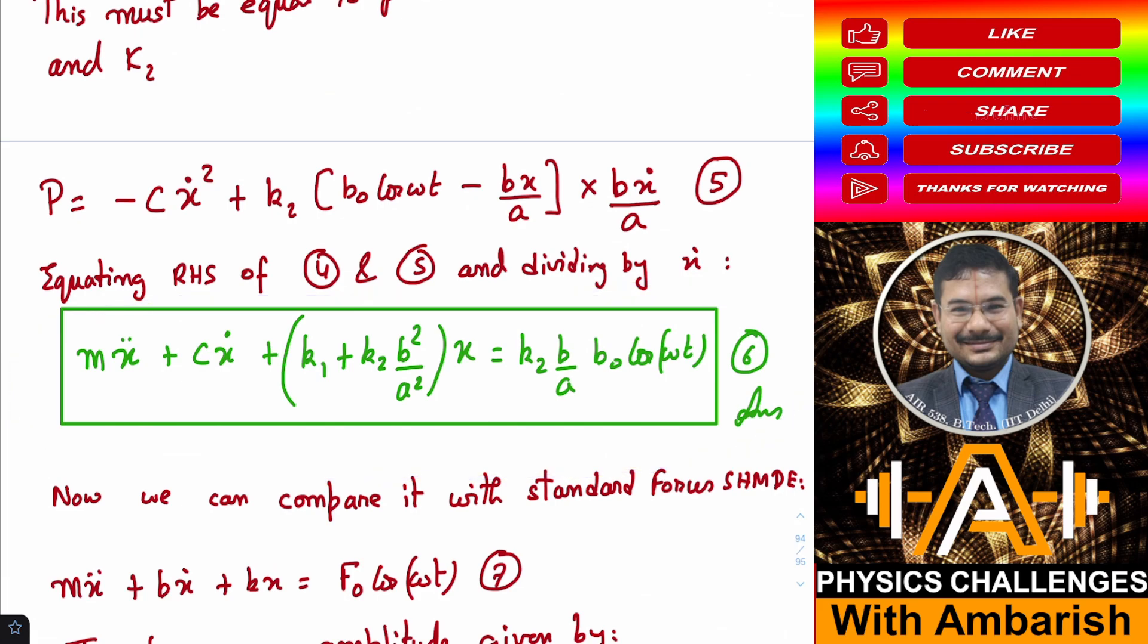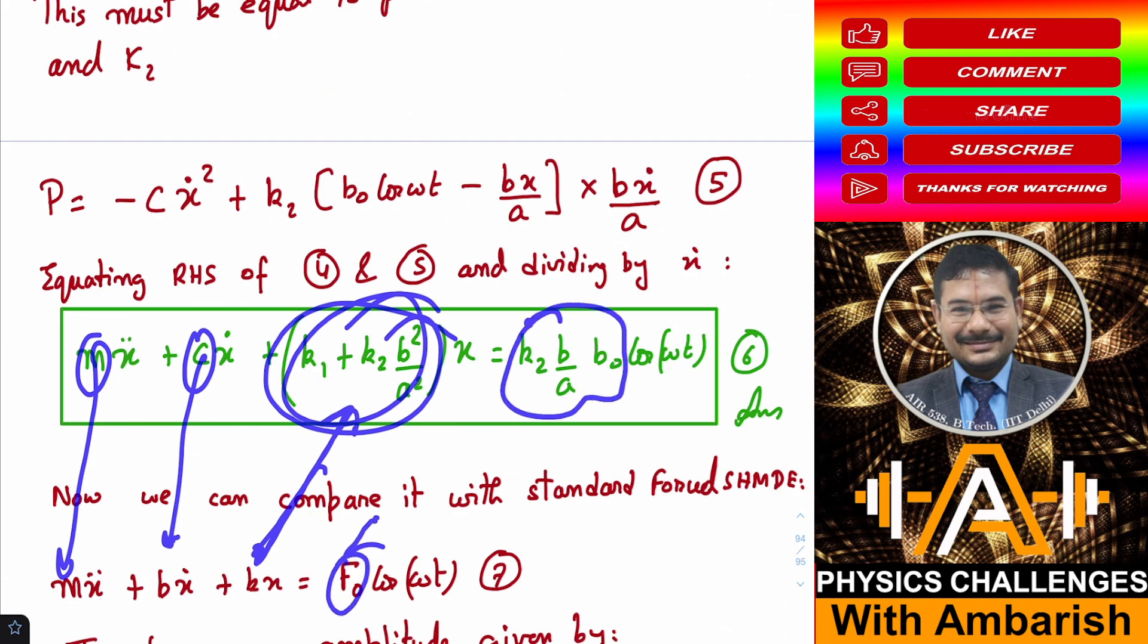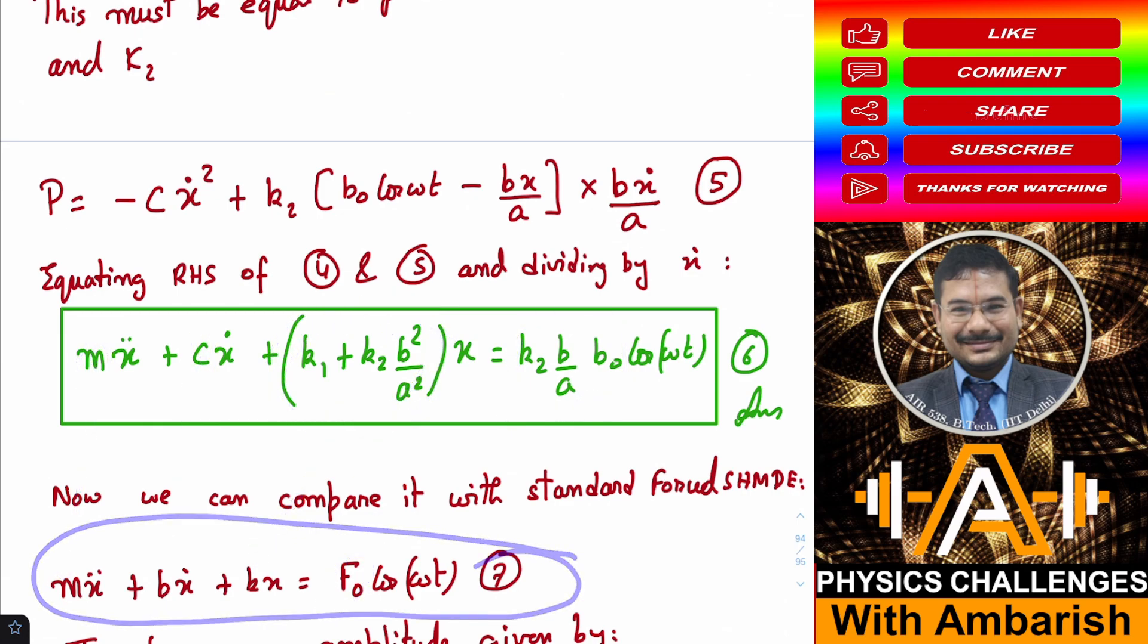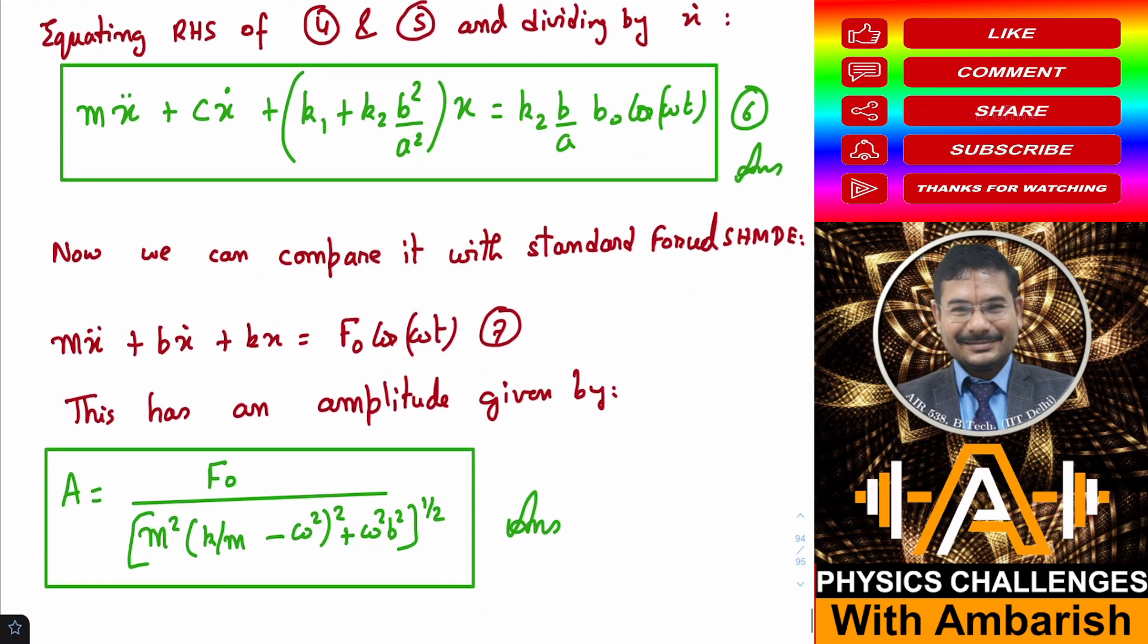That was the first part of the question. Now we can compare it with our standard forced oscillation SHM differential equation. The standard equation is M X double dot plus B X dot plus KX equals F_0 cos omega t. We can now compare the equivalence: M is of course M, C becomes B, and K becomes K1 plus K2 B²/A². This becomes the K effective. F_0 is K2 B/A into B_0. We know the standard solution to equation 7 and we can just plug and chug now.